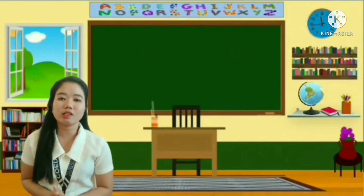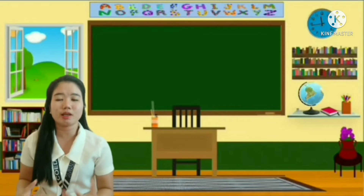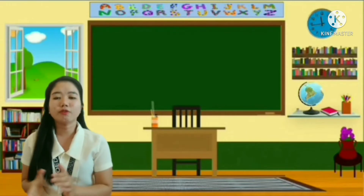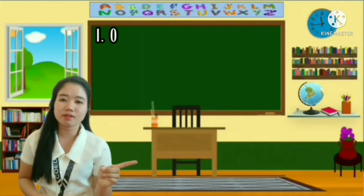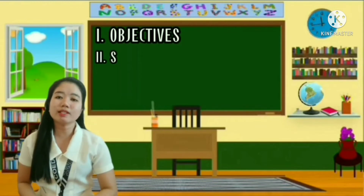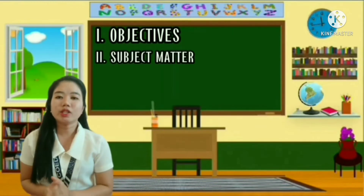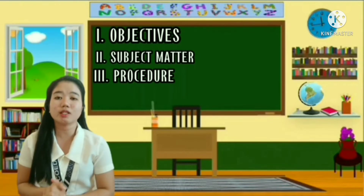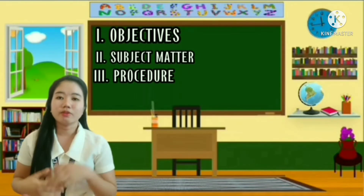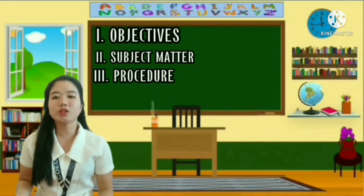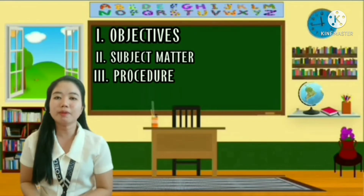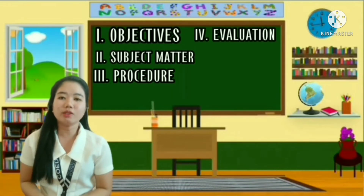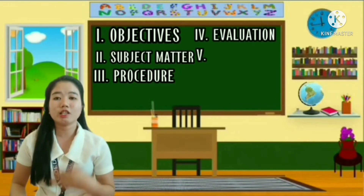So here are the important things to remember when making a semi-detailed lesson plan. First, we have objectives. Second, we have subject matter. Third is procedure — and under procedure, we have the sub-components, which are: routine activity, review, motivation, lesson proper, application, and generalization. Followed by evaluation, and for the last one, assignment.